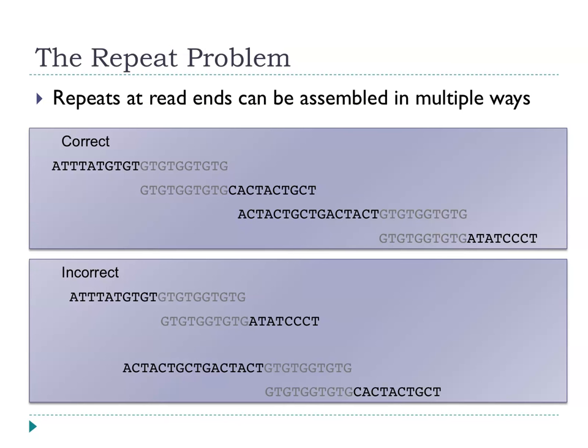This means that even when you have very dense coverage — sequencing the genome to 50-fold coverage, meaning your library covers the genome 50 times over — you will still never get from the shotgun alone to one single contiguous 1, 2, or 4 million base pair genome sequence. There will always be ambiguous regions due to repeats, regardless of depth of coverage.